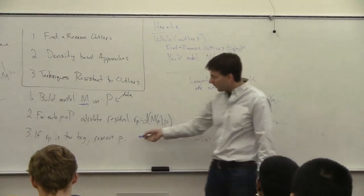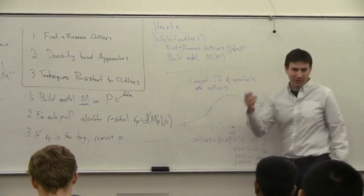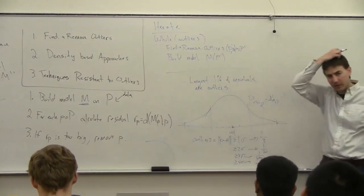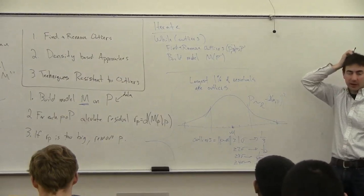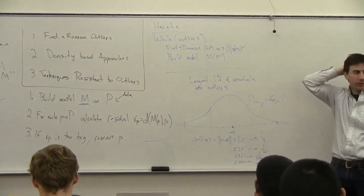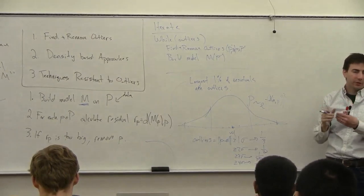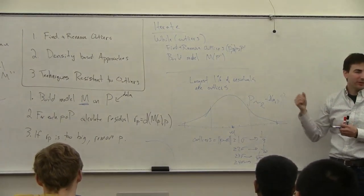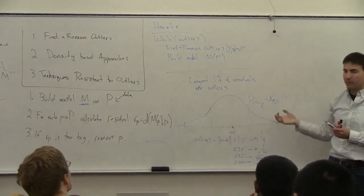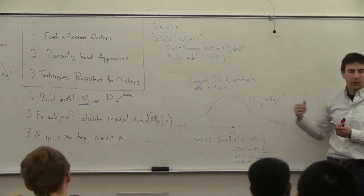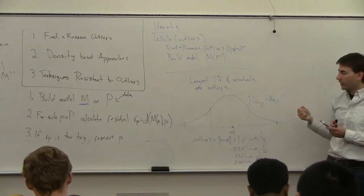In general, picking the threshold of what is too large is not an easy problem. You can sometimes do some form of cross-validation where you use different thresholds, leave some data out, and see how well it predicts based on your model if you kept the data in or out — learning over the parameter using cross-validation.